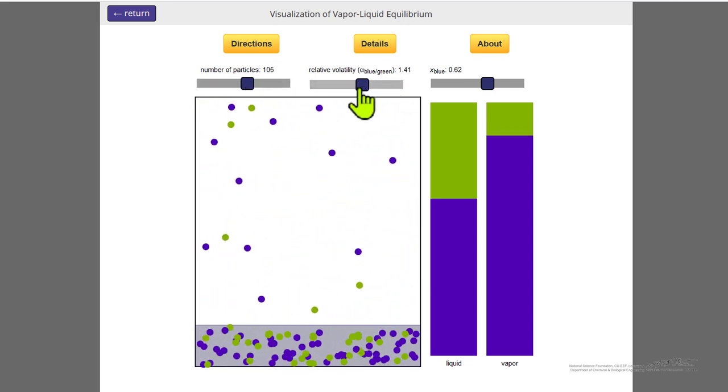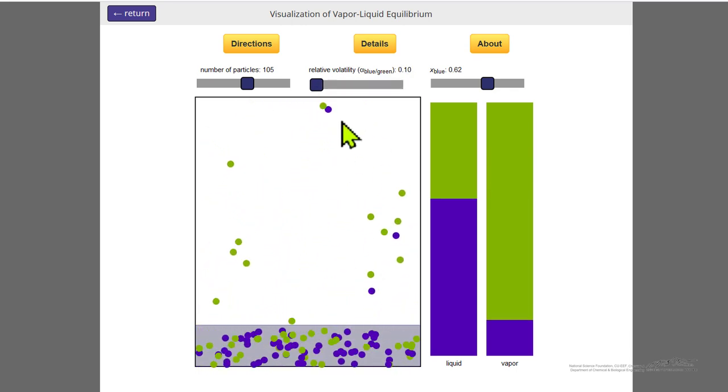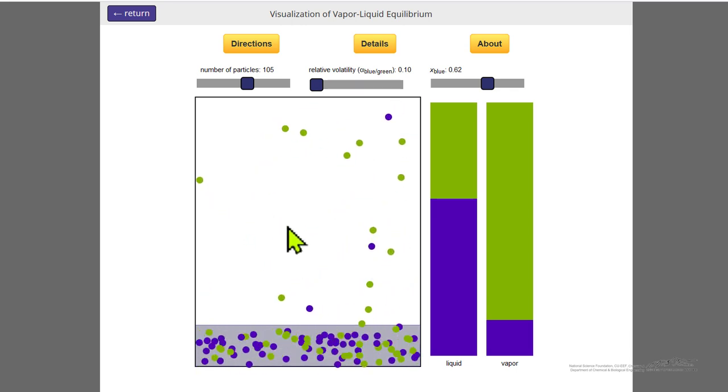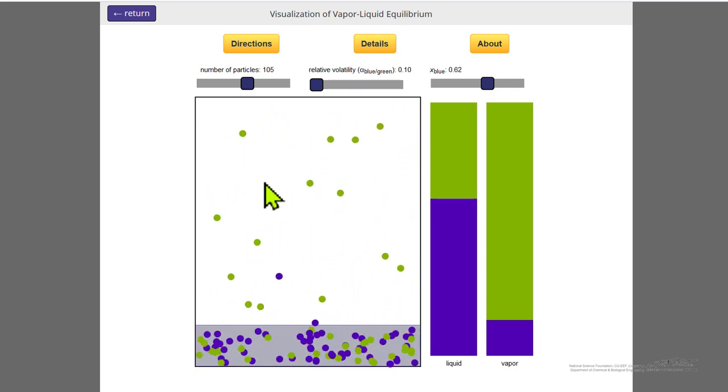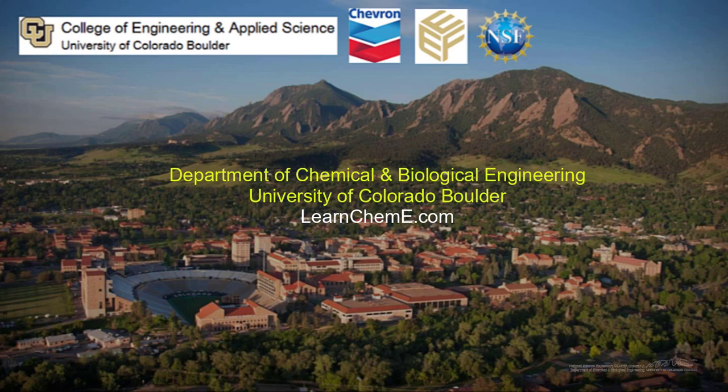We can change the relative volatility. Now the relative volatility is very low, so we're enriched mainly in the green molecules, and the vapor phase is indicated in this bar graph as well.